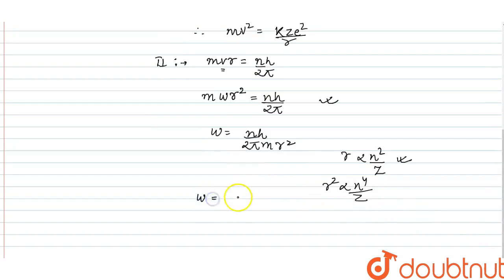So omega is directly proportional to 1/n³.